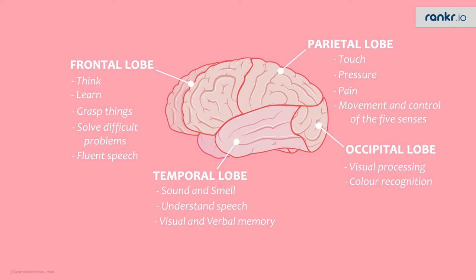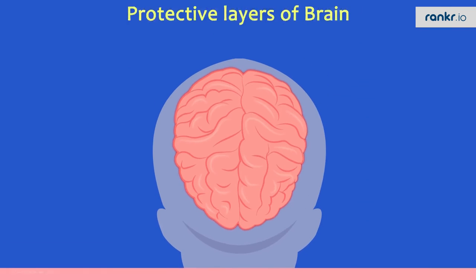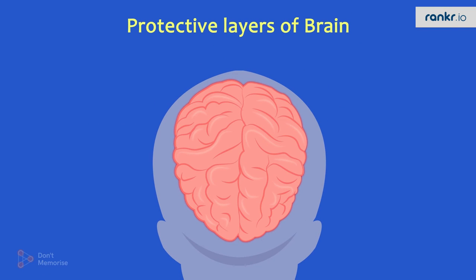All these lobes perform their duties sincerely enough to give quick and efficient responses. This was a brief overview of the human brain. Now we need to know how this extremely important asset fits in and is protected in the skull. Let's have a look at the structure of the various protective layers around the brain in the upcoming video.